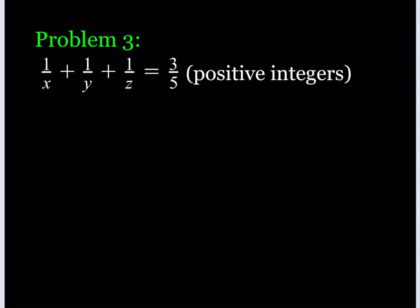For this equation I'm going to use inequalities. First, notice that if x = 1, then 1/y + 1/z = 3/5 − 1 = −2/5, which is impossible since we're dealing with positive integers whose reciprocals can't sum to a negative quantity. So none of these variables can be 1, meaning x, y, z are all greater than or equal to 2.